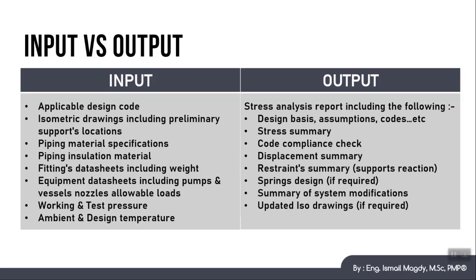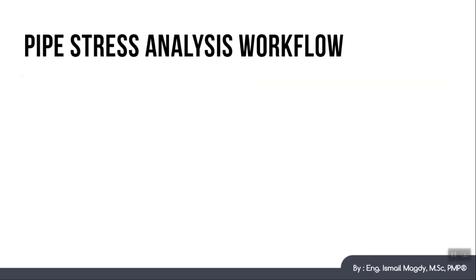A supports reaction summary sheet is also needed because you need to submit it to the structural engineer who is going to carry out the support structure design. Additionally, spring design if you have any in your system, and a summary of any modification you had to do on the system such as changing support location or numbers or any change in the piping layout. So now based on what we have discussed, let us go through the workflow of the pipe stress analysis.